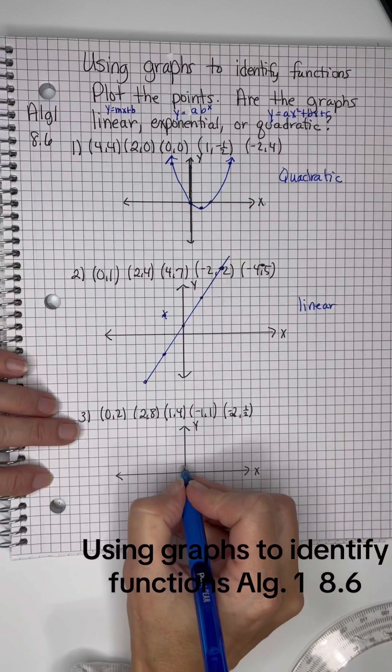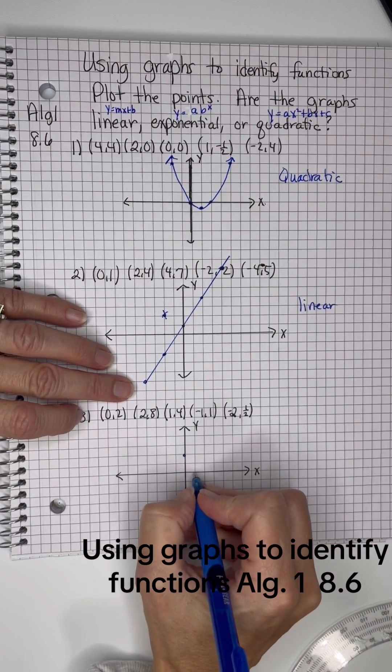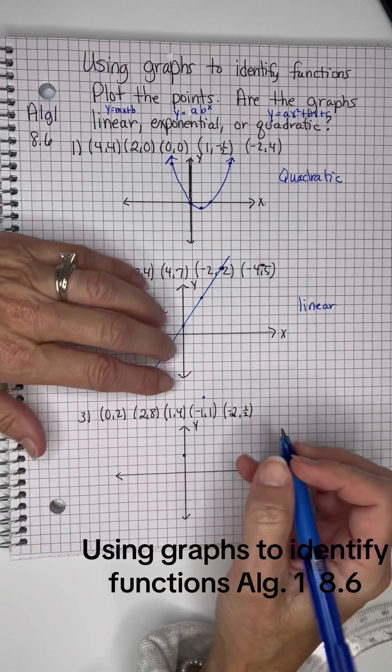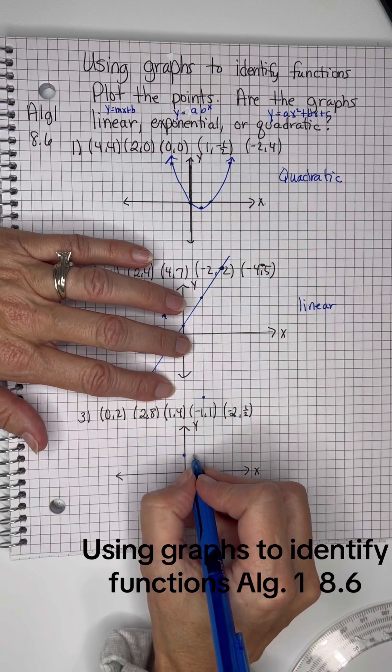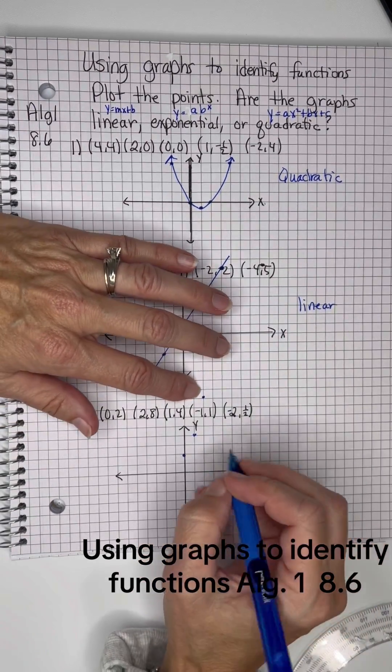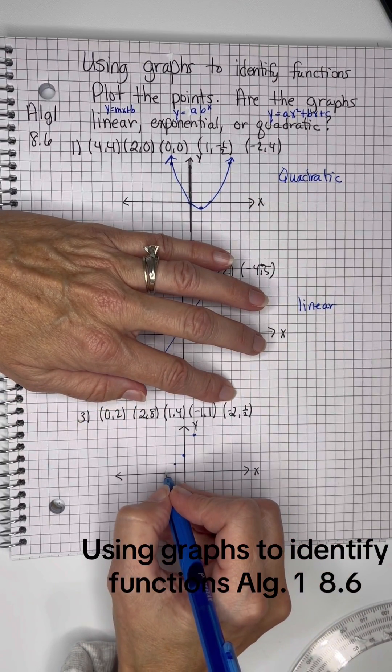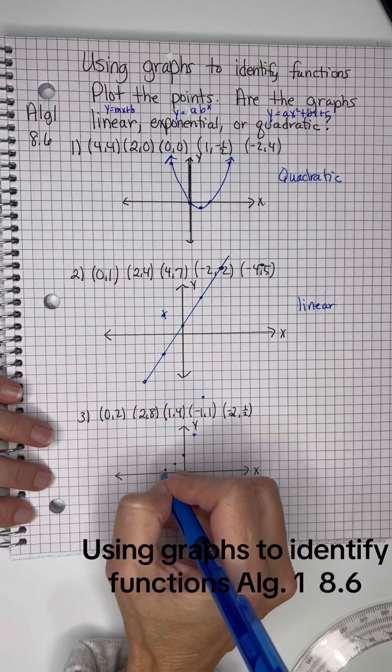And then here, 0, 2, 2, 8, 1, 4, negative 1, 1, negative 2, 1 half. So if you look at this one,